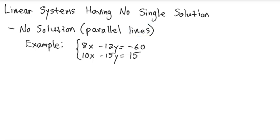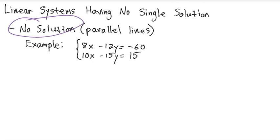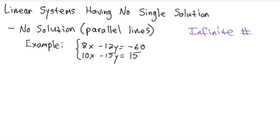Sometimes a system of linear equations has no single solution. So I think every example you've seen so far, there has been a solution for X and Y. But every once in a while, you'll get a system of equations that has no single solution. And there's two varieties: one is where there's no solution at all, and the other one is where there are an infinite number of solutions.